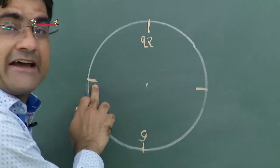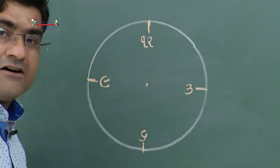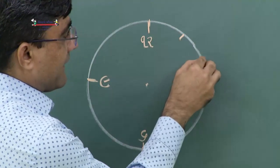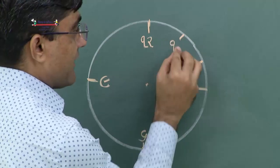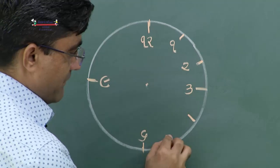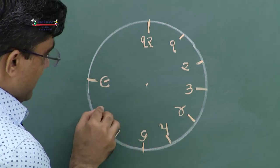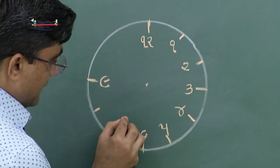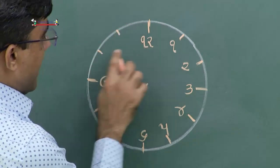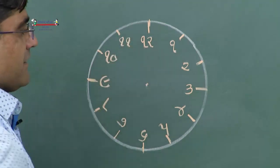આ રીતે બીજા બે કાપા દોરી દઈશું - આ ત્રણ અને આ નવ. હવે બાર અને ત્રણની વચ્ચે સરખા ભાગ કરે એવા બે કાપા દોરીશું - ત્યાં એક, બે. ત્રણ અને છની વચ્ચે પણ બે કાપા - ચાર અને પાંચ. છ અને નવની વચ્ચે બે કાપા - 7 અને 8. 9 અને 12ની વચ્ચે બે કાપા - 10 અને 11.